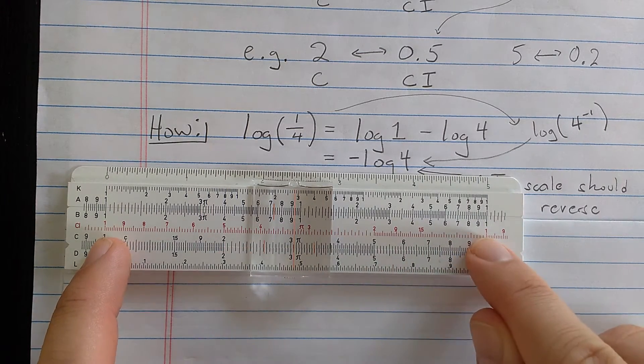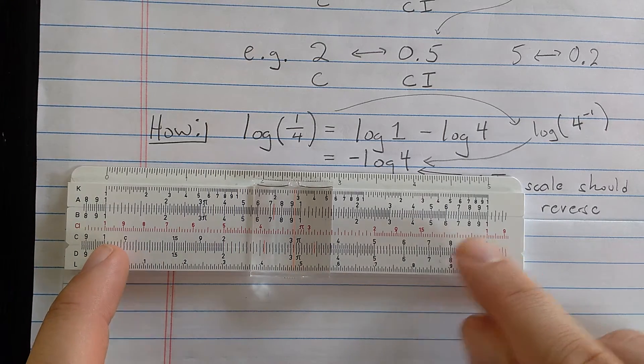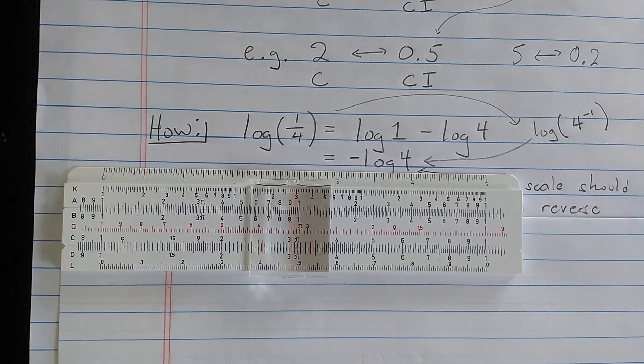The distance from 1 to 3 running in reverse on the CI scale is the same as the distance from 1 to 3 running forward on the C scale. So the CI scale exactly runs in reverse of the C scale.